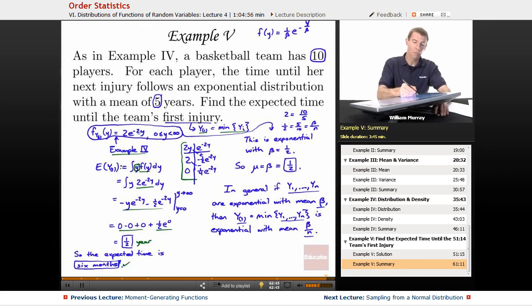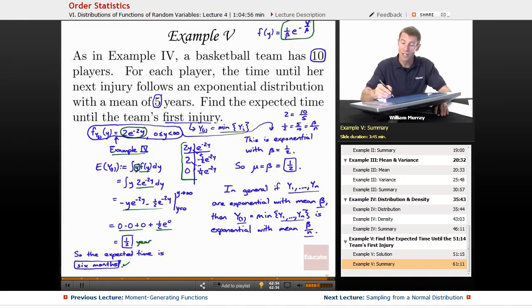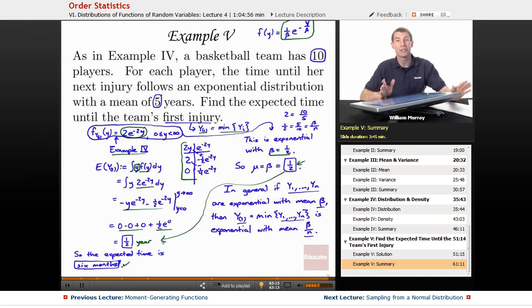The short way is to look back at this density function and say, wait a second, I recognize that as an exponential distribution. It's just an exponential distribution with a new beta. Beta is one half. And so, if you know your exponential distribution, you know the mean is just beta, and so I could have immediately jumped to my answer there of one half a year without ever having to do that integral and all that integration by parts.